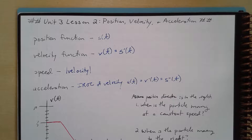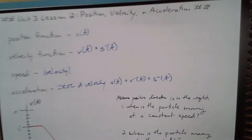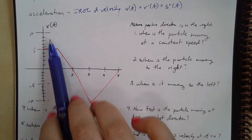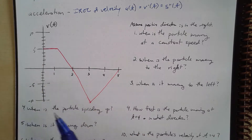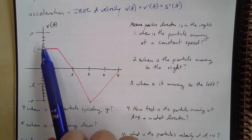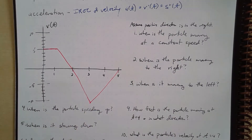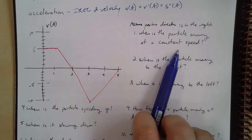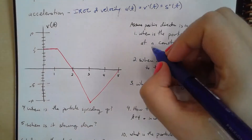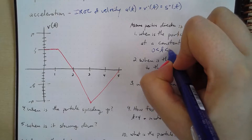Here we have a velocity graph — the derivative of the position function — and we'll assume the positive direction is to the right. So if it's positive, the object is going right; if negative, it's going left. When is this particle moving at a constant speed? It's constant from 0 to 1, because the slope here is constant, so 0 < t < 1.